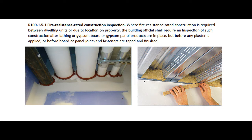R109.1.5.1 Fire Resistance Rated Construction Inspection. Where fire resistance rated construction is required between dwelling units, or due to location on property, the building official shall require an inspection of such construction after lathing or gypsum board or gypsum panel products are in place, but before any plaster is applied.